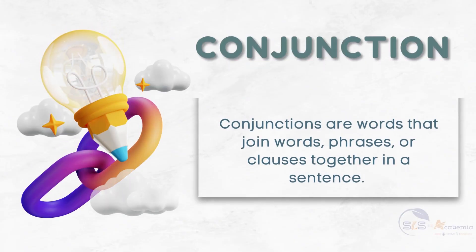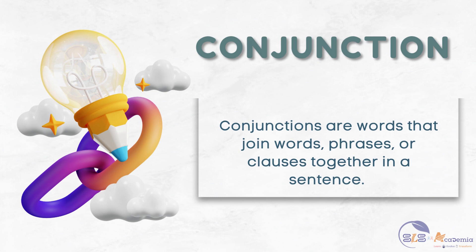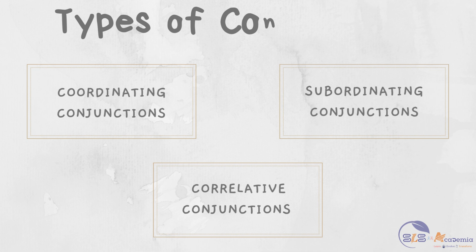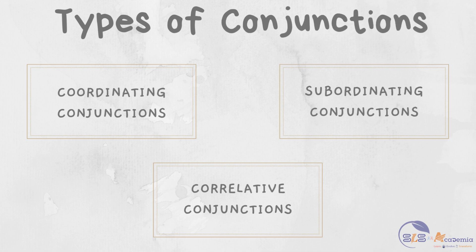Conjunctions are words that join words, phrases, or clauses together in a sentence. They help create coherent sentences by linking related thoughts, making communication more fluid and connected. Without conjunctions, our sentences would sound disconnected and our speech would be quite difficult to comprehend. There are three main types of conjunctions: coordinating conjunctions, subordinating conjunctions, and correlative conjunctions.